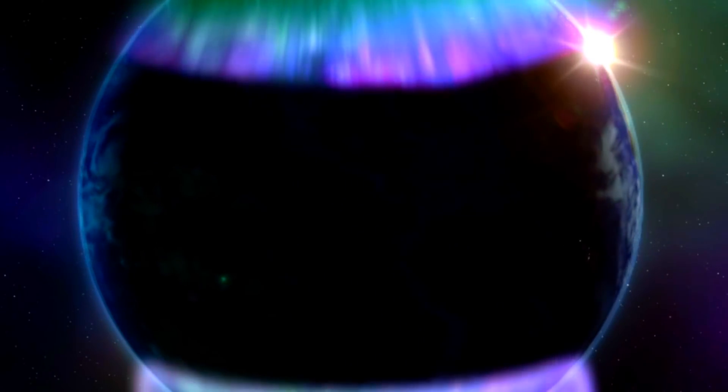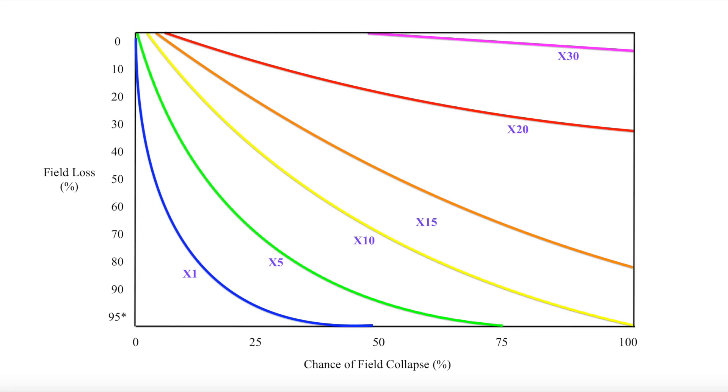We looked at how Earth being down about 20% or so in the field today increases those risks, and how that might scale across different field loss scenarios. Now, these applications are easier to consider when contextualized in this way.